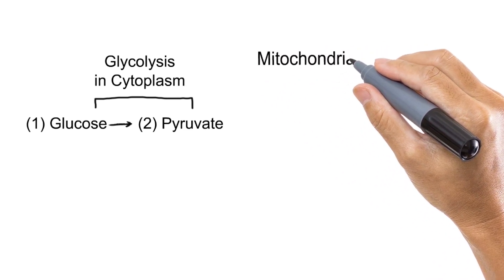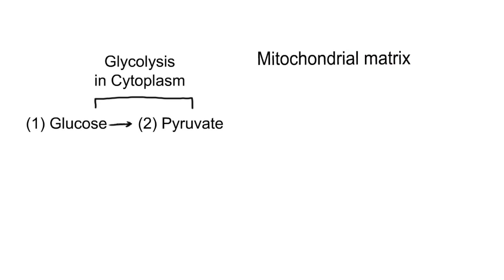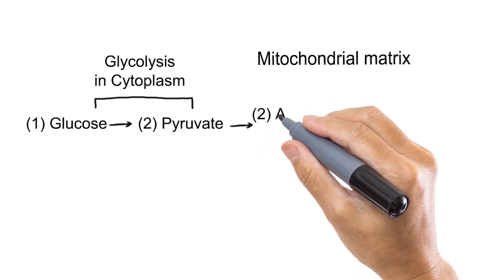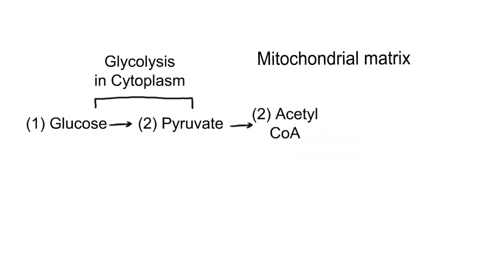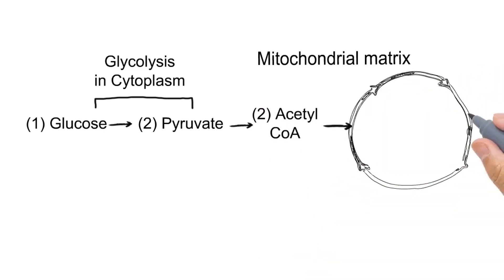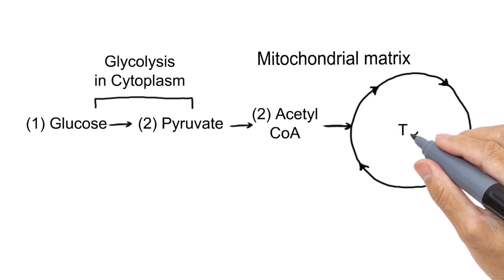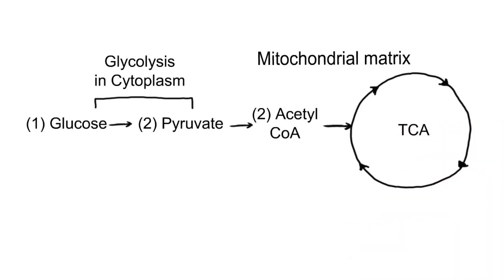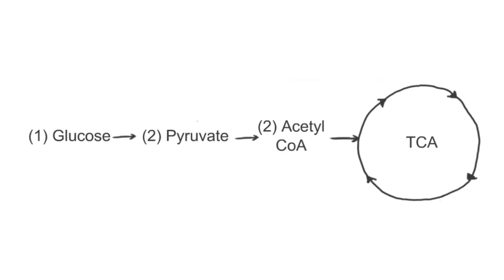These two molecules of pyruvate enter the mitochondrial matrix — the innermost compartment of mitochondria — where they are further converted to two molecules of acetyl-CoA. Finally, these two molecules of acetyl-CoA join a pathway called TCA, also known as the citric acid cycle or Krebs cycle, where glucose is further oxidized.